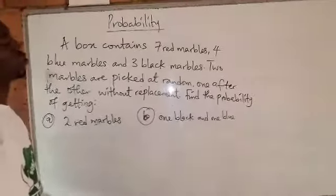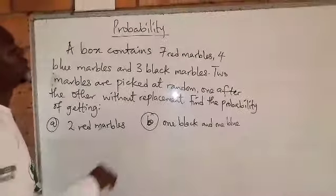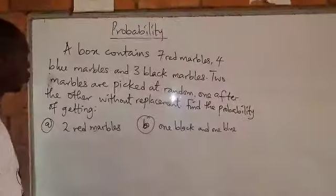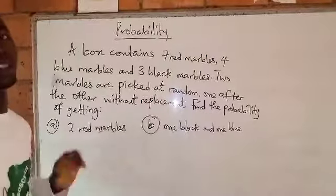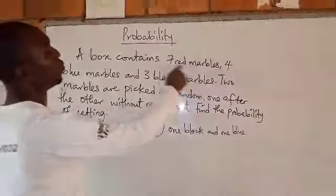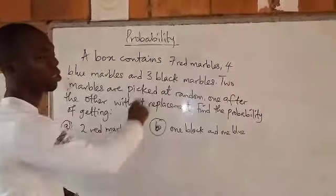In this question, there are 7 red marbles. The probability of getting a red marble will be 7 out of the total. The total here is 7 plus 4 plus 3, which is 14.